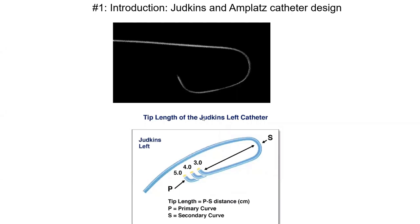This is a Jutkins left catheter and the Jutkins right. Like most catheters, they have two bends — what we call the primary curve and the secondary curve — and the distance between those curves defines the size of the catheter. When we say Jutkins left four, it means we have four centimeters between those two bends.